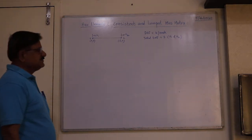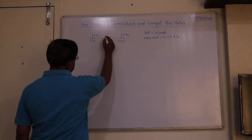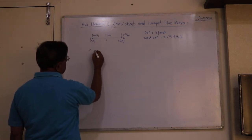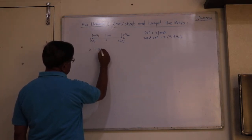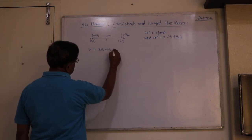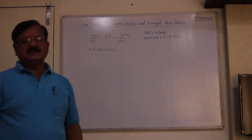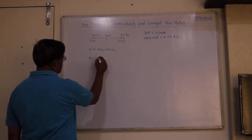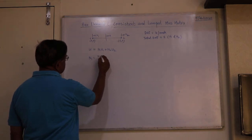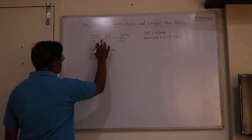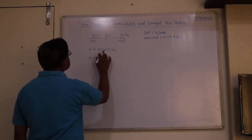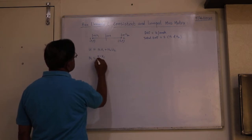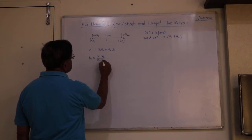The displacement function at any point within the element can be assumed using a polynomial function: N1·u1 + N2·u2. These shape functions are calculated using the Lagrange interpolation formula. So let's consider coordinates x1 and x2.